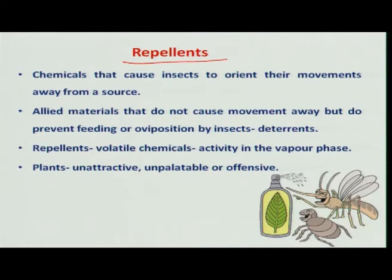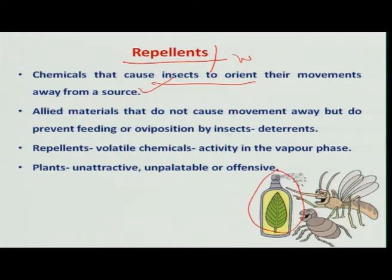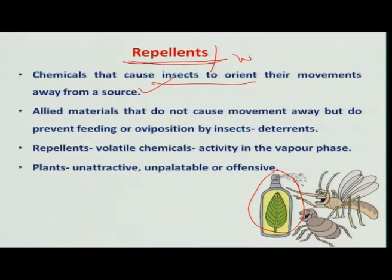Repellents cause insects to orient their movement away from the source — in contrast to attractants which attract towards the source, repellents repel. These repellents can also work as feeding deterrents. After a few hours of treatment, they act as feeding deterrents: when sprayed on a surface, insects may not sit there initially and will be repelled. But after a few hours when efficacy is lost, insects can sit on the treated surface but cannot feed. In that way, repellents also work as feeding deterrents.